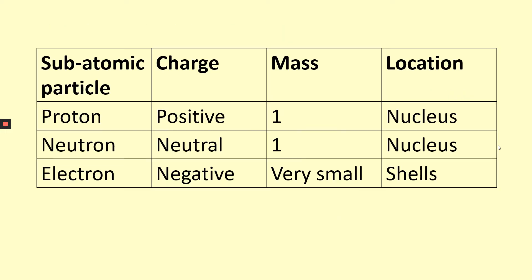You can put all of that information into a table to make it easier to retrieve the information so we can eventually write our answer to the original question. You can see that a proton has a positive charge, a mass of one, and is found in the nucleus. A neutron has a neutral charge, a mass of one, and is also found in the nucleus. An electron has a negative charge, is very small, and is found in the shells.